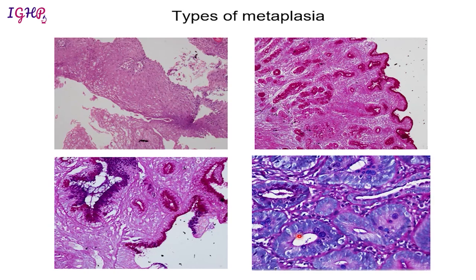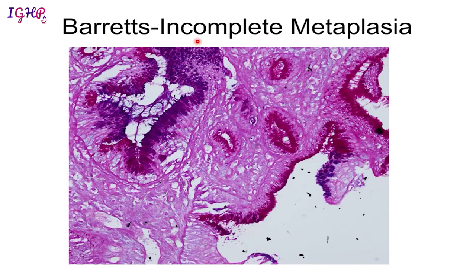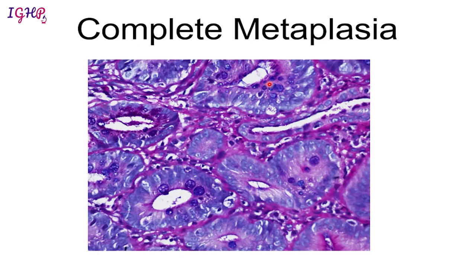If acid injury continues further, the entire epithelium transforms into a completely small intestinal type, where PAS positive foveolar cells are lost and only Alcian blue positive goblet cells remain. The PAS stain now lines the brush borders of the glands. To summarize: incomplete metaplasia shows goblet cells accompanied by PAS positive gastric foveolar cells, while complete metaplasia shows only Alcian blue positive goblet cells and PAS positive brush borders.